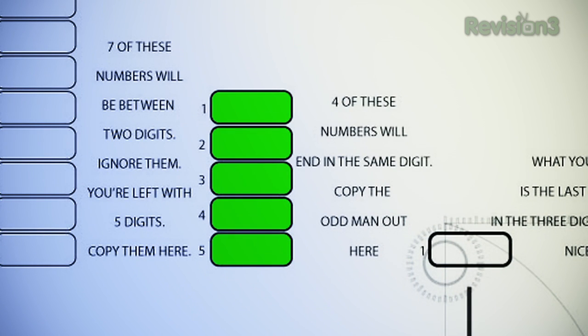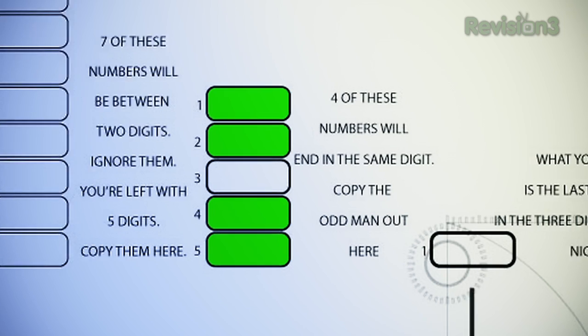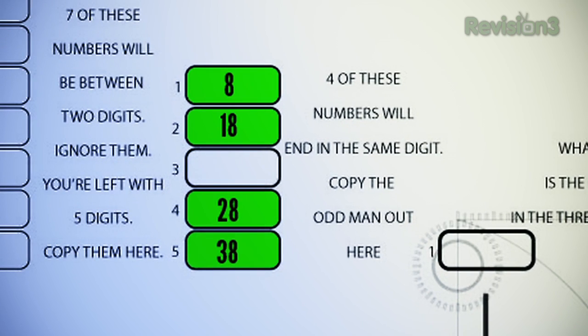Of these five remaining numbers, four of them will have the same last digit. So in our example it was 8, 18, 28, and 38. Throw all those out and you should be left with one number. Whitson, what's ours? 22. So 22 is the last number in our padlock's combination.